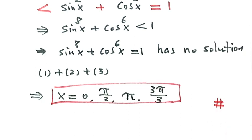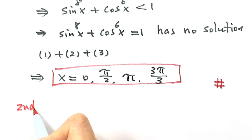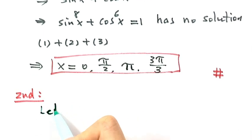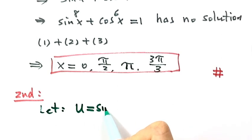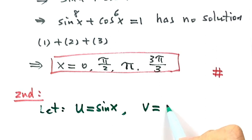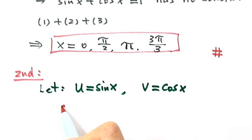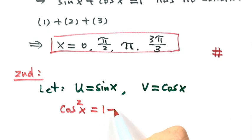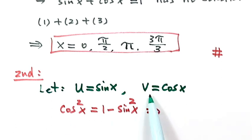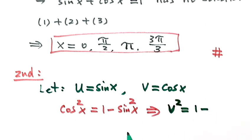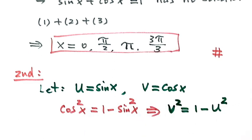Now let's see the second method. We're going to define two new variables: let u equal sine x, and v equal cosine x. Using the identity cosine x squared equals 1 minus sine x squared, we get v squared equals 1 minus u squared. We'll use these substitutions to solve our equation.